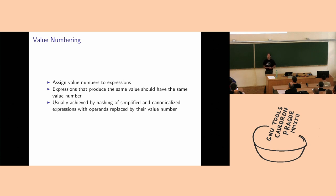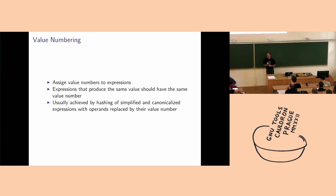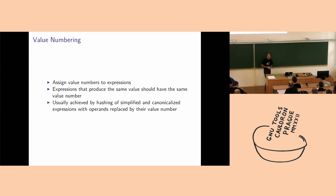Before hashing a new expression, implementations replace all operands by their value number, so you have expressions of values, which you then assign either an existing or a new value number.